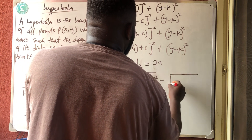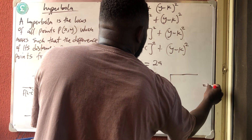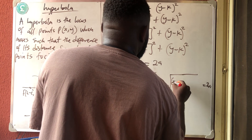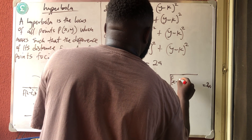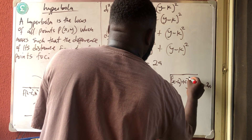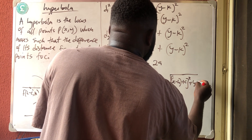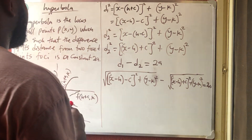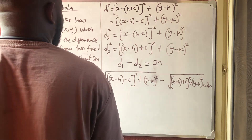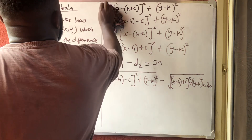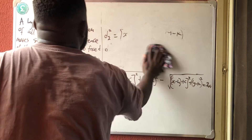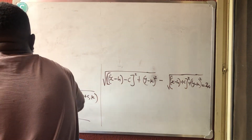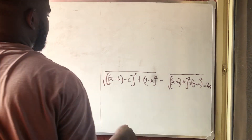Before squaring both sides, two square roots cannot remain on the same side, so let me move one to the other side. Then we do what is called squaring both sides.